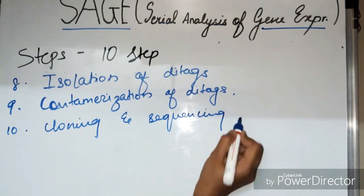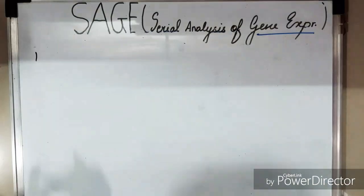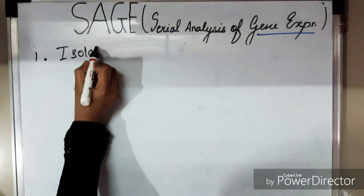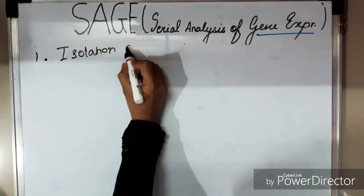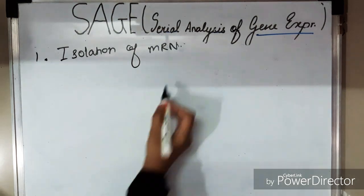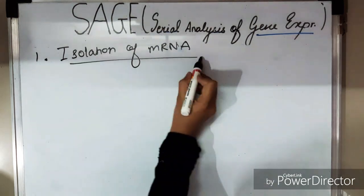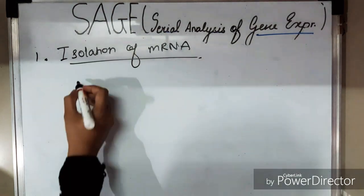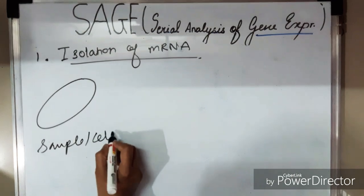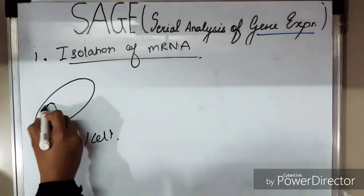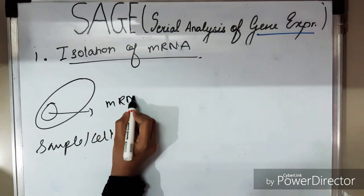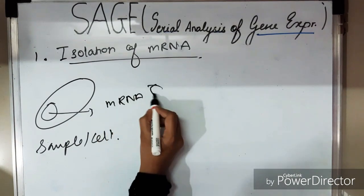The first step is isolation of mRNA. The mRNA from the sample or cell of interest — whether a normal cell or a diseased cell — is isolated.